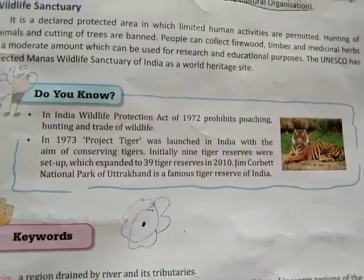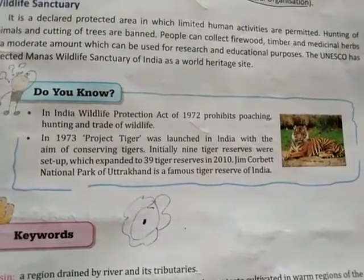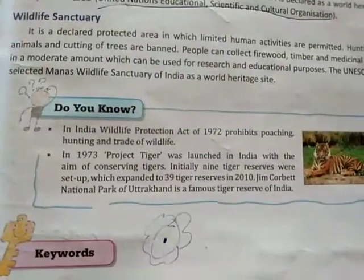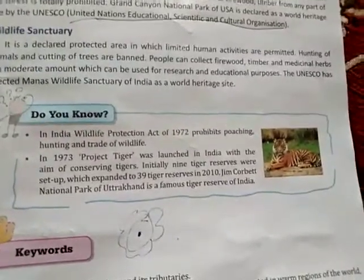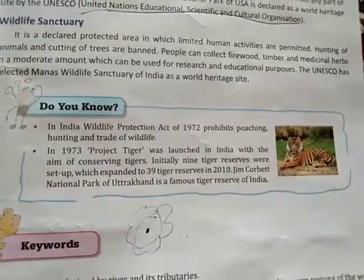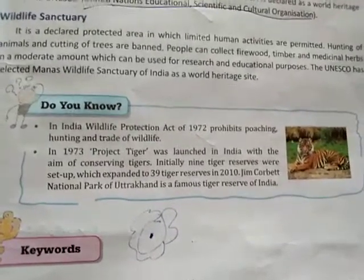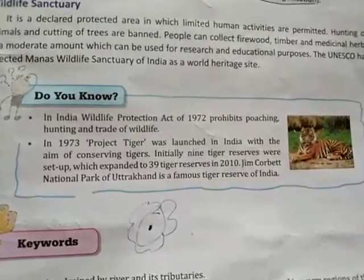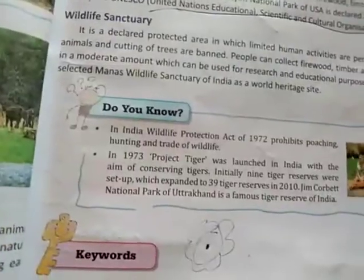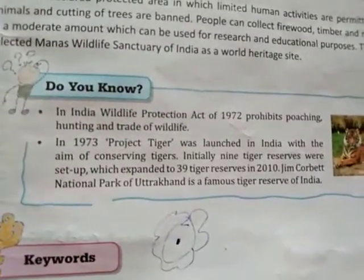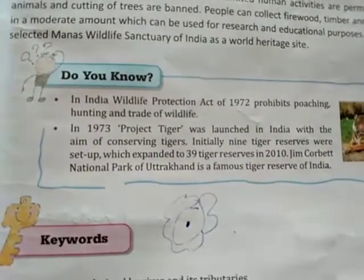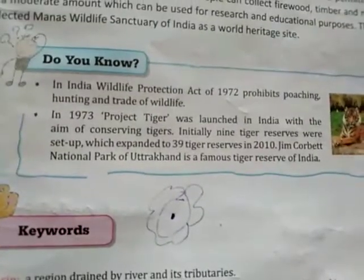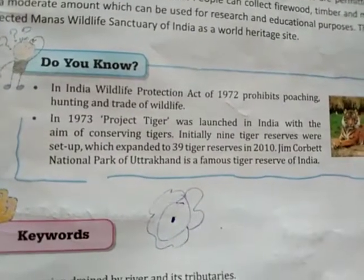In India, the Wildlife Protection Act of 1972 prohibits poaching, hunting, and trade of wildlife. In 1973, Project Tiger was launched in India with the aim of conserving tigers. Initially, nine tiger reserves were set up, which expanded to 39 tiger reserves in 2010. Jim Corbett National Park of Uttarakhand is a famous tiger reserve of India.